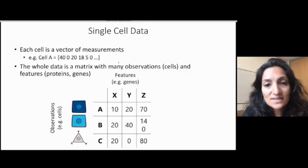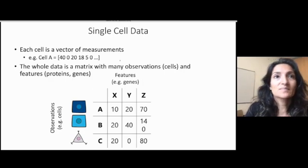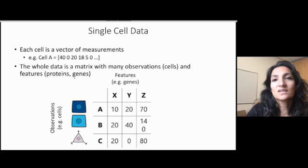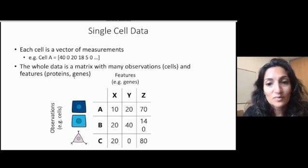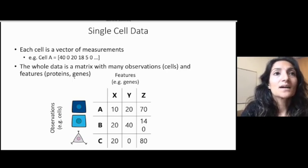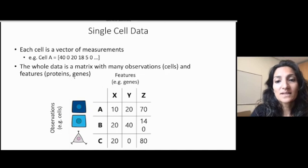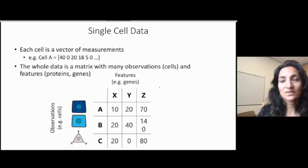To give you another example, remember the single cell RNA sequencing data that I had talked about previously. Here, each observation is a cell, and each cell is basically a vector of gene measurements, and this gives the copies of mRNA for a particular gene that the cell is making. The whole data is a matrix of many cells and many genes, and so each entry is a gene count for a particular cell.